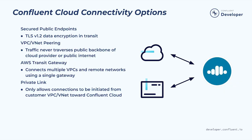So what are our connectivity options? At a high level, we have four options for connecting to Confluent Cloud. The first is Secure Public Endpoints — public IP addresses accessed over the internet, with everything encrypted in transit using TLS 1.2. The second is VPC or VNet Peering, where you directly connect the Confluent network with your cloud network and traffic never traverses the public internet, using the cloud provider's private backplane. The third is AWS Transit Gateway, an extension of peering where the Confluent network is peered to one of your transit gateways, acting as a cloud router to connect multiple VPCs and remote networks. The fourth is PrivateLink, a one-way communication that only allows connections to be initiated from your network to Confluent Cloud.